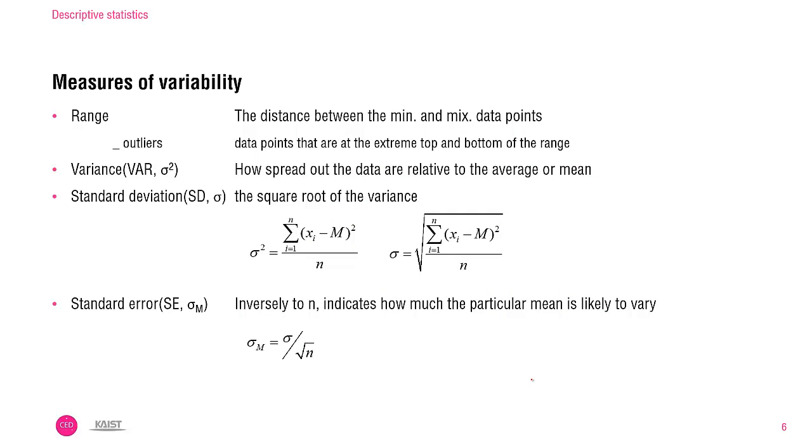There are three common measures of variability: the range, the variance, and the standard deviation. The range is the distance between the minimum and the maximum data points. By observing the range, you will identify outliers, which are data points that are at the extreme top or bottom of the range.